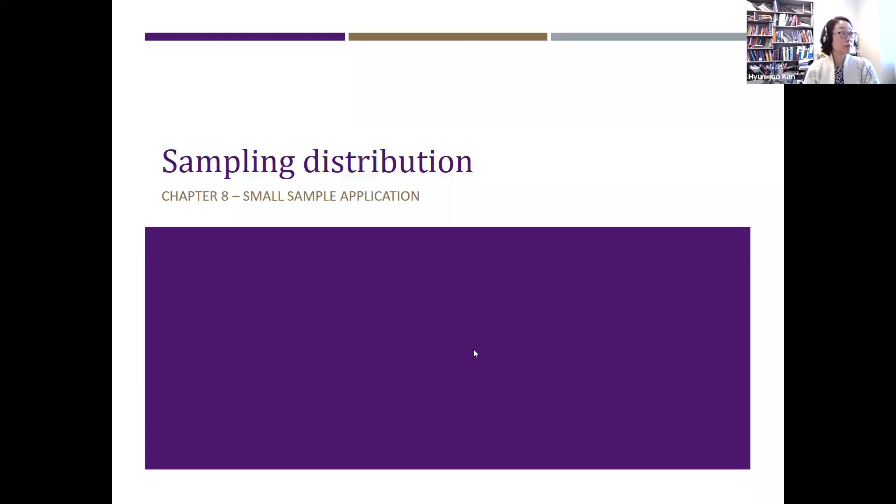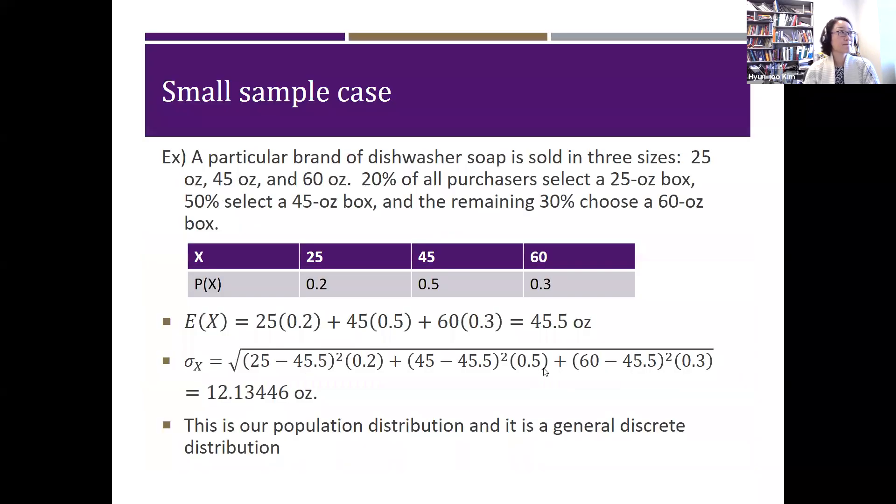Okay, so here's a sampling distribution with a small sample application. As an example, we'll look at some dishwasher soap. A particular brand of dishwasher soap is sold in three different sizes: 25, 45, and 60 ounces. 20% of all purchasers select 25 ounces, 50% select 45, and the remaining 30%. So there is a little table of the distribution. Here is what the size of it, that is X, and then probability of X: 20%, 50%, and 30%.